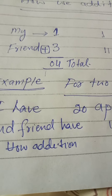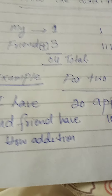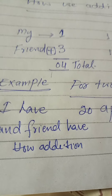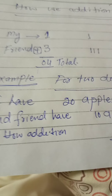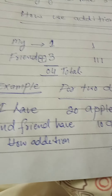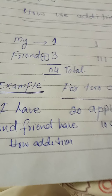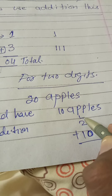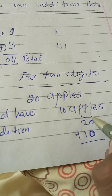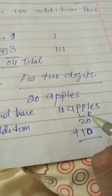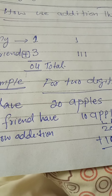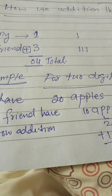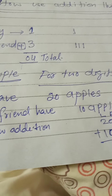20 plus 10. First, we solve the right side. 0 plus 0 is equal to 0.